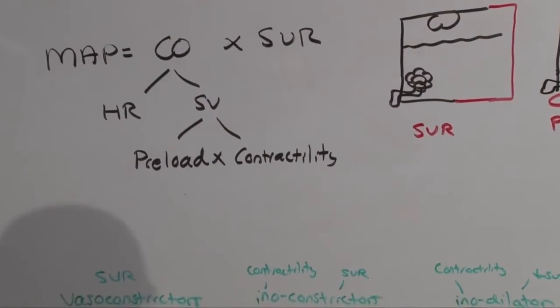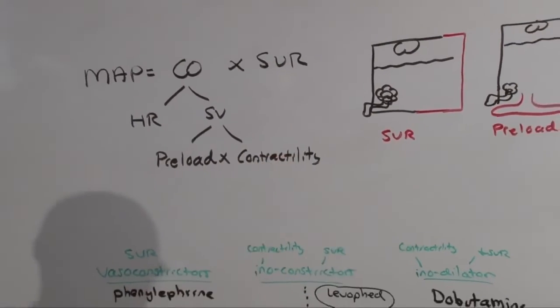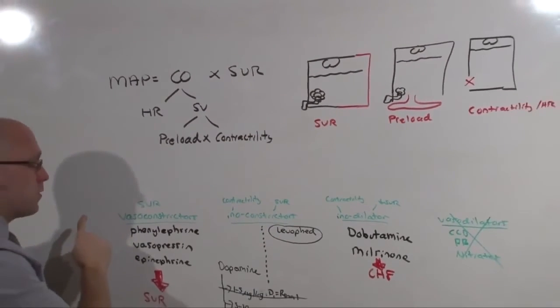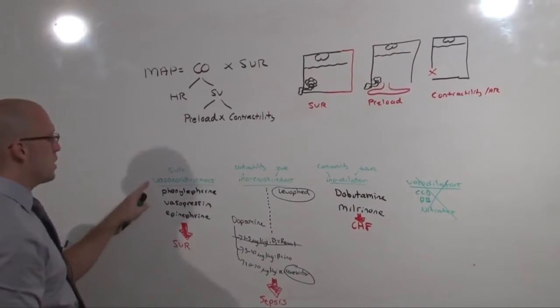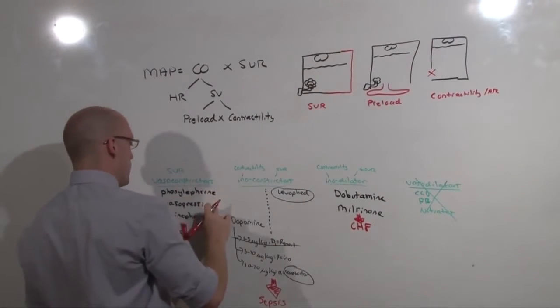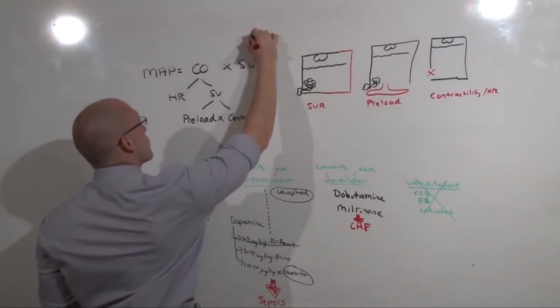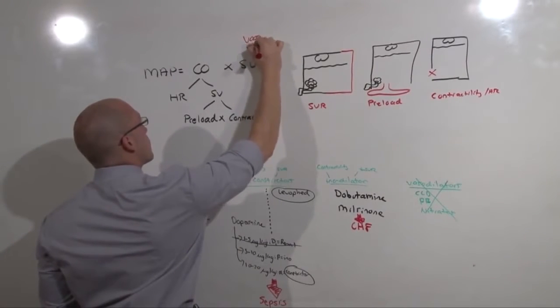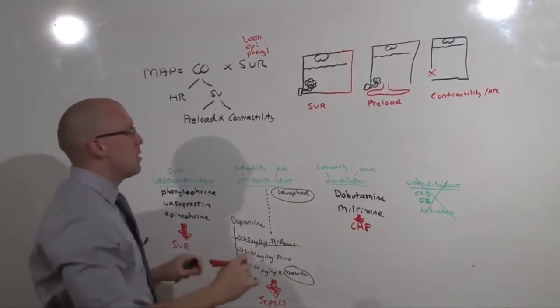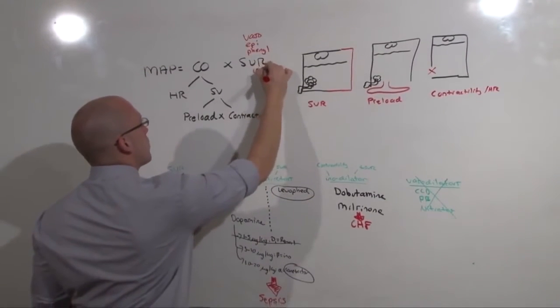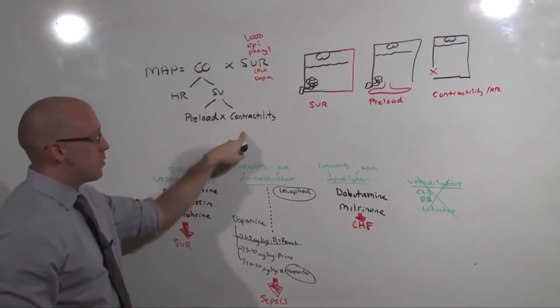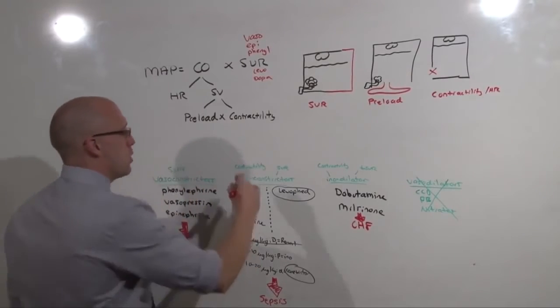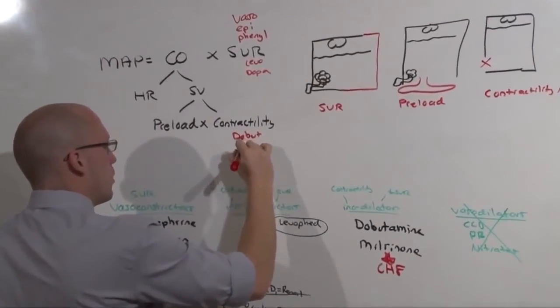So let's see what this means in relation to our two models. If you have pure vasoconstrictor defects, and you want just a pure vasoconstrictor, you're going to give phenylephrine, vasopressin, or epinephrine. Unless it's sepsis, in which case you pick levo or dopamine. If it's a contractility issue, you give inotropic support with dobutamine or milrinone.